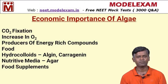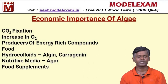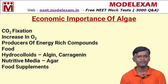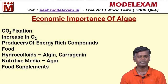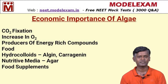Algae are rich producers of energy-rich compounds and are utilized as supplements, including single-cell protein produced by Spirulina, which is also used in space travel. Algae produce pigments used in the bakery industry, and hydrocolloids like algin and carrageenan. Agar, produced by Gracilaria and Gelidium, serves as a nutritive medium for bacteria and fungi and as a source of vitamins and minerals.